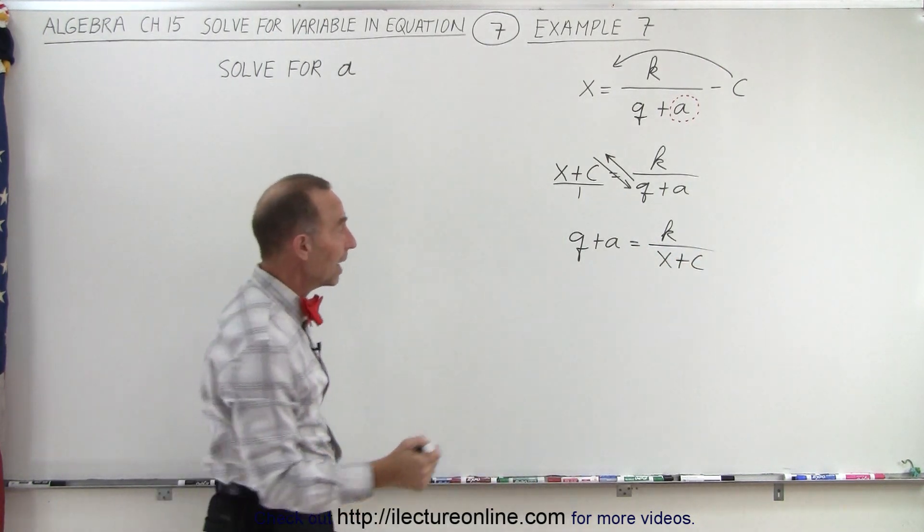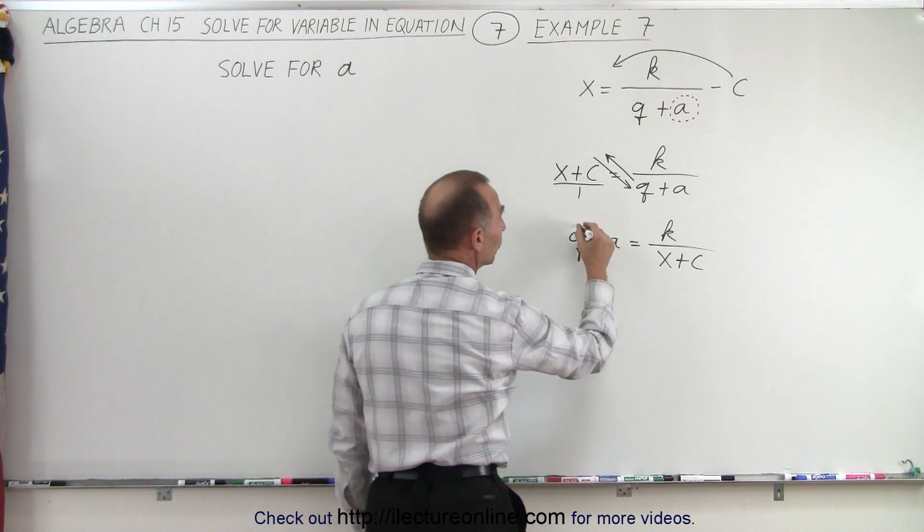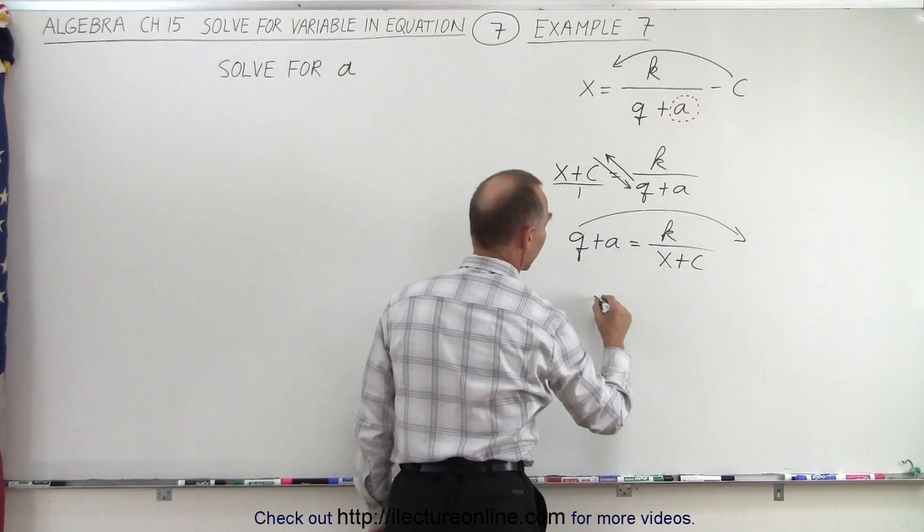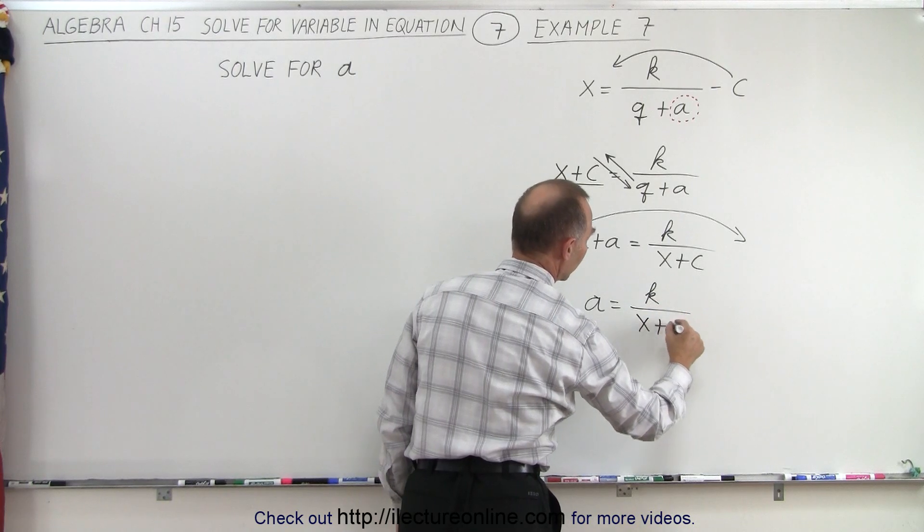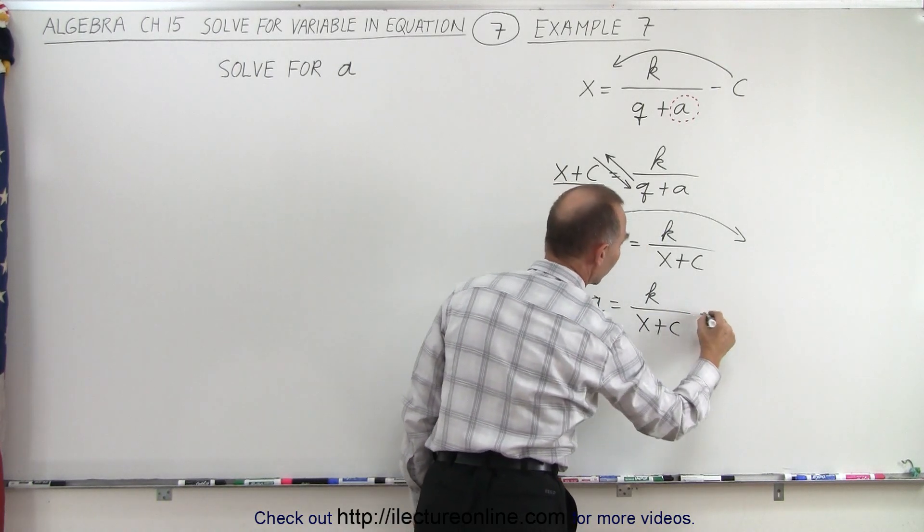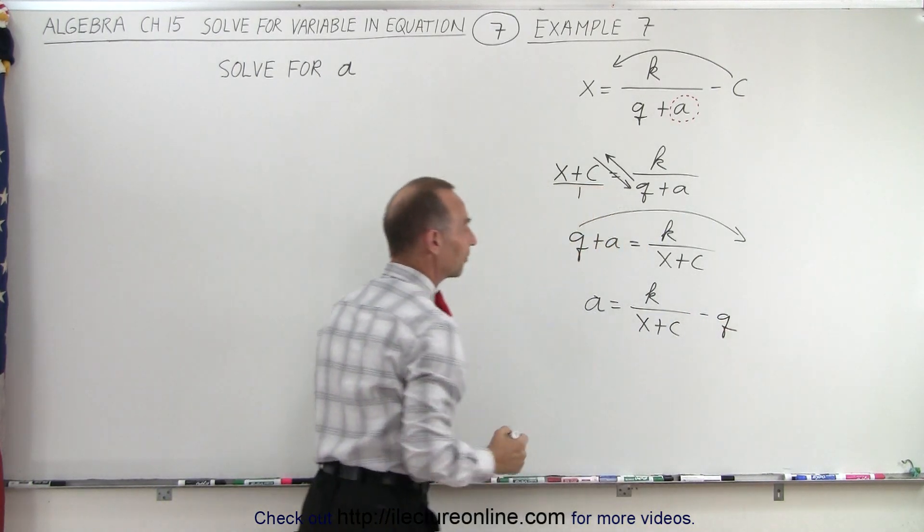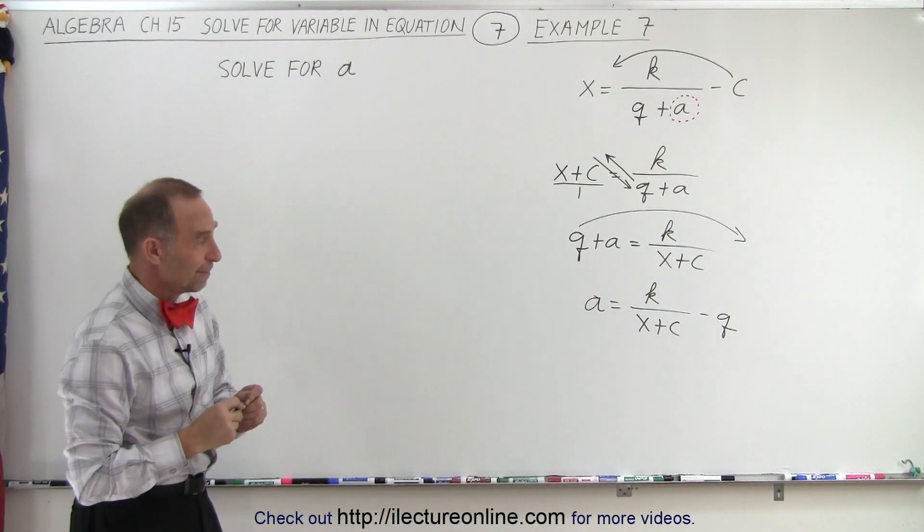Finally, since we're looking for A, we need to get rid of the Q. Move the Q to the right side and we get A equals K over X plus C, and the plus Q becomes a minus Q on the left side. And that is how we solve for the variable A.